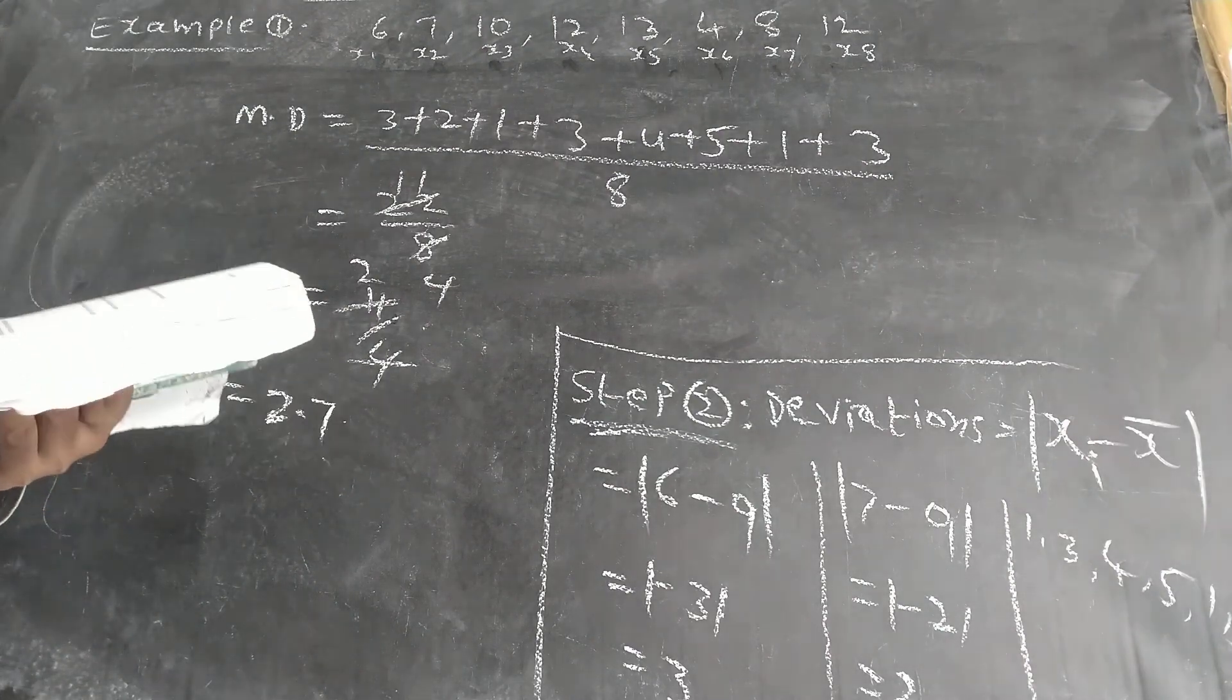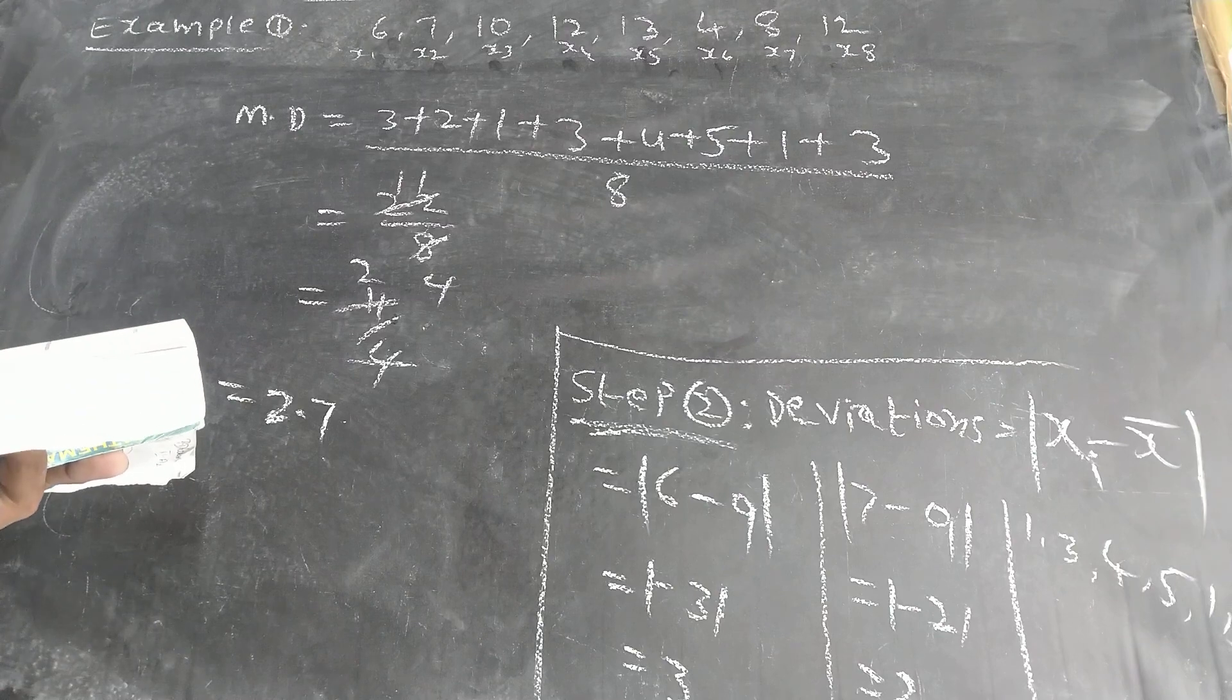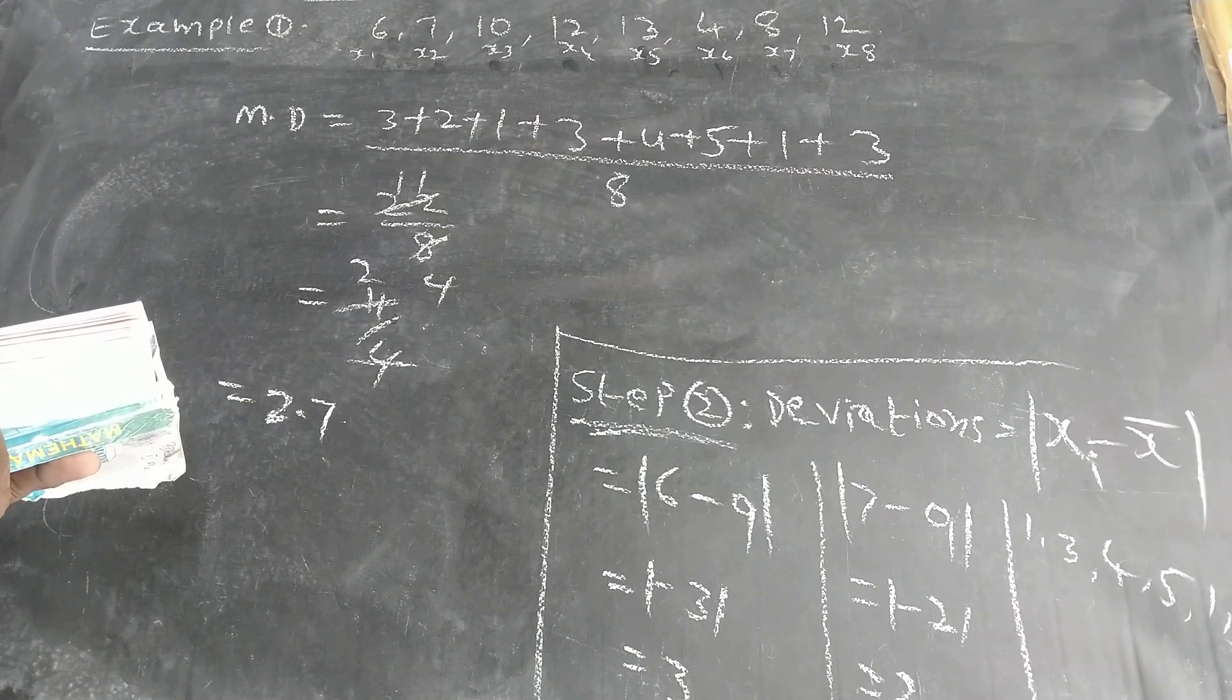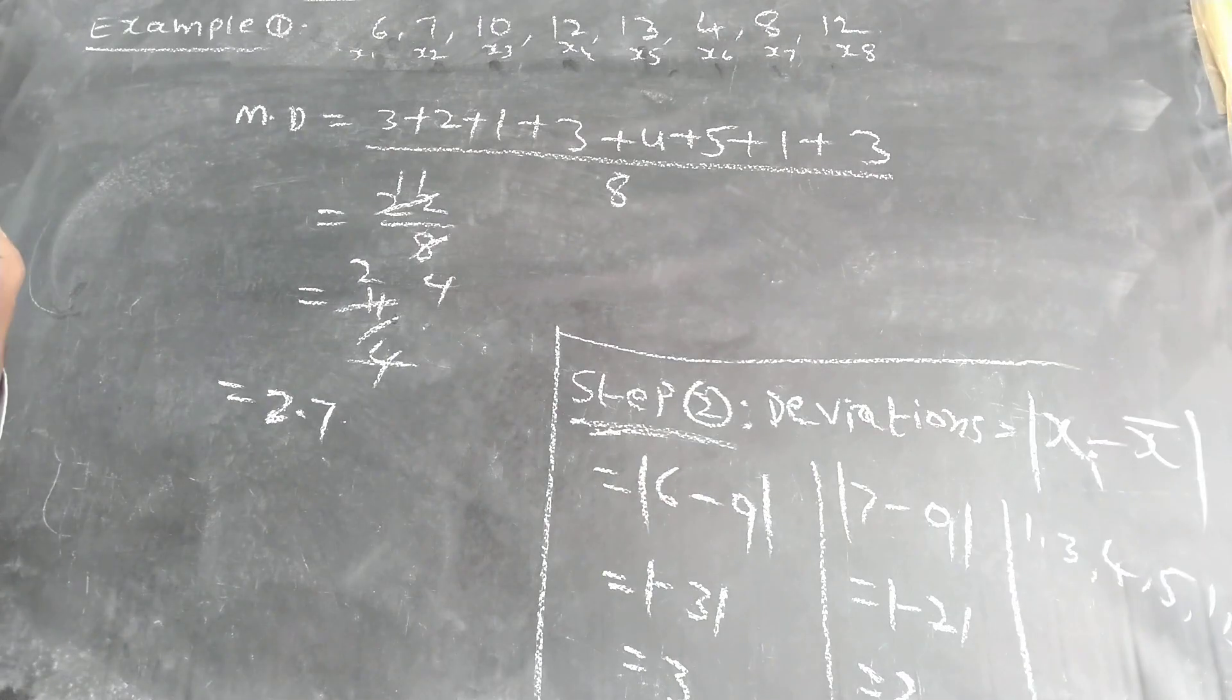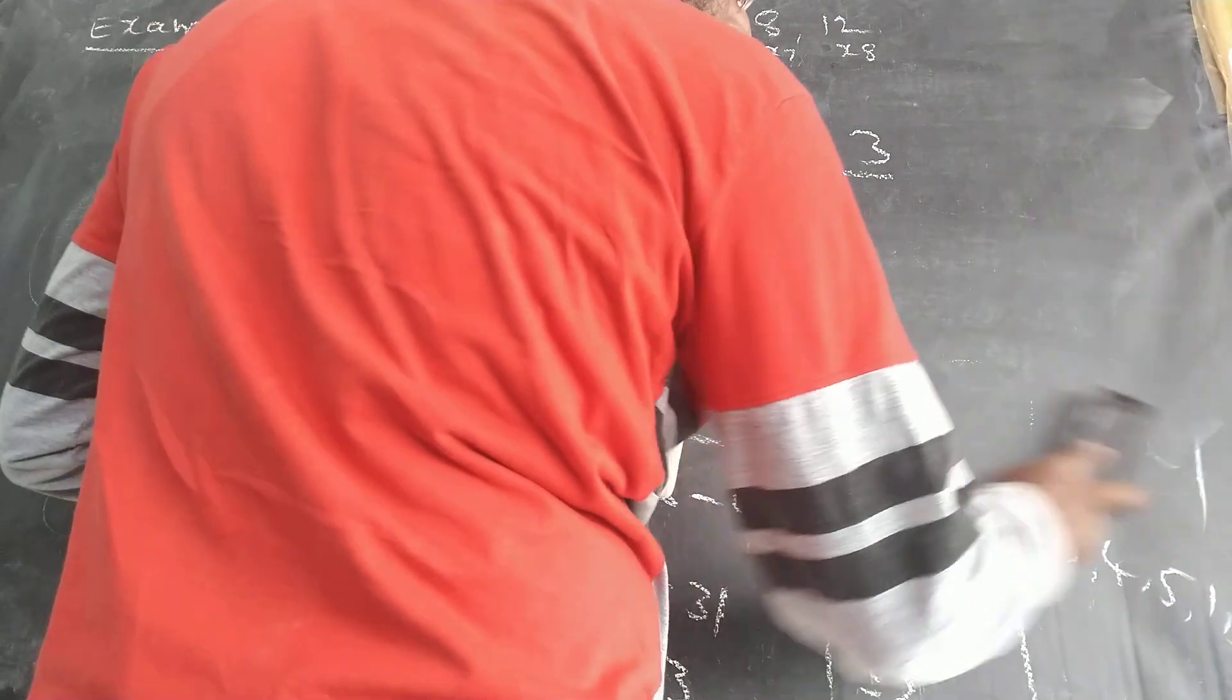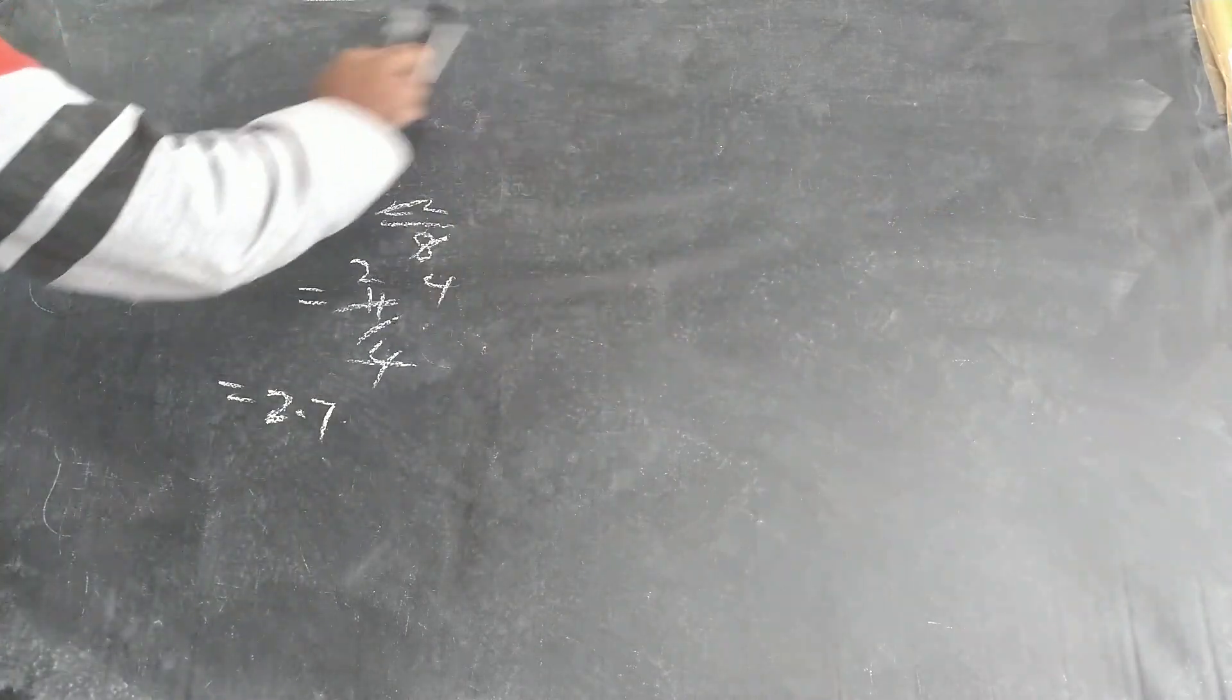Let's try to find out second example. So first, whatever the given numbers, you have to add and find the average. Then subtract that average from whatever the given values, the remaining values will come. Those values again: sum of the values by number of the values. Second one over, one more example.